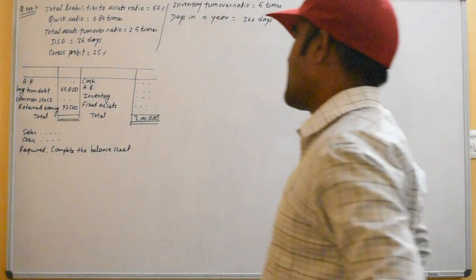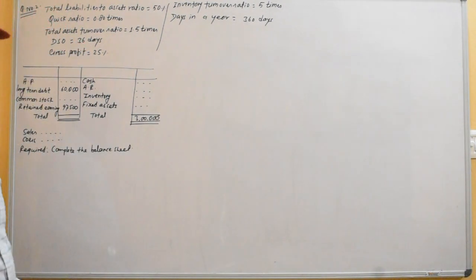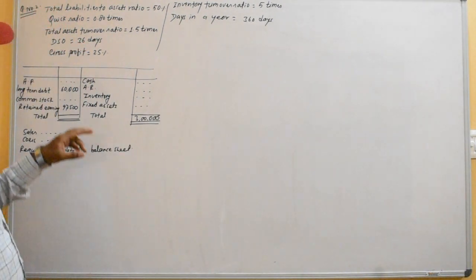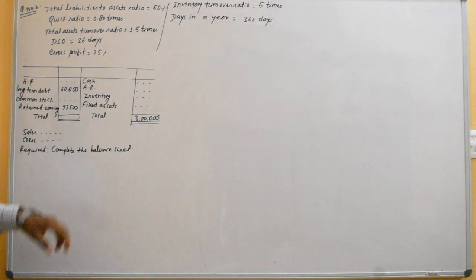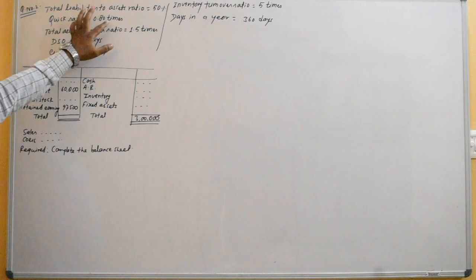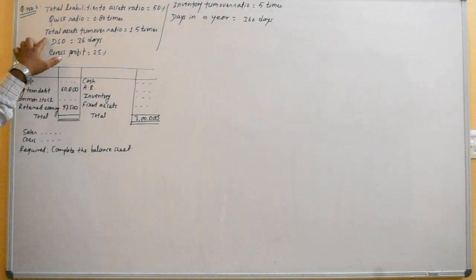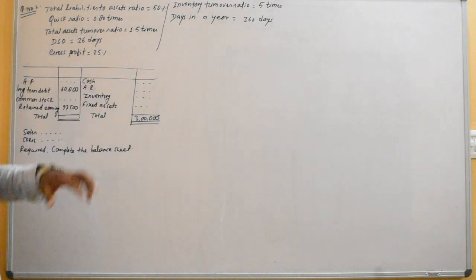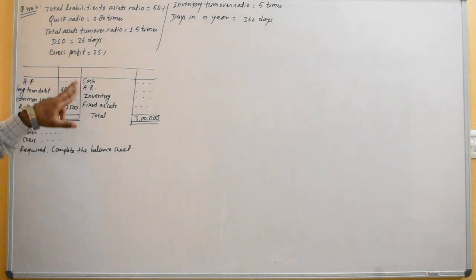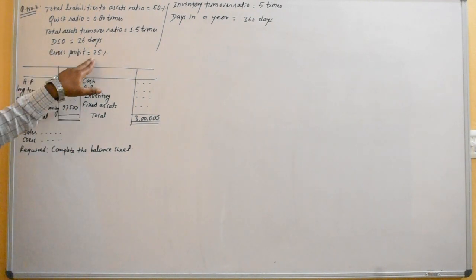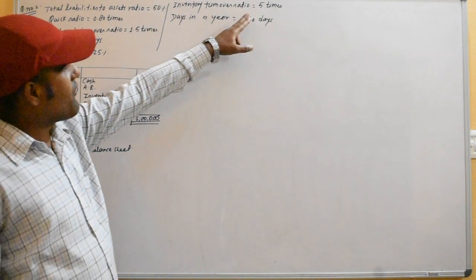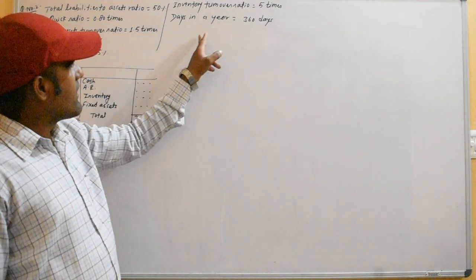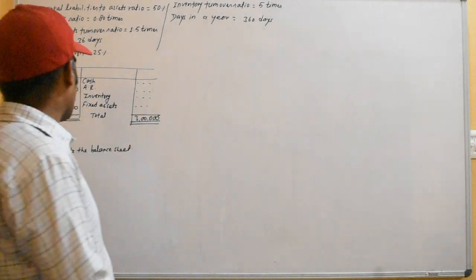Question number two: given the following ratios — debt-to-assets ratio 50%, quick ratio 0.8 times, total assets turnover 1.5 times, DSO 36 days, gross profit margin 25%, inventory turnover 5 times, days in year 360.